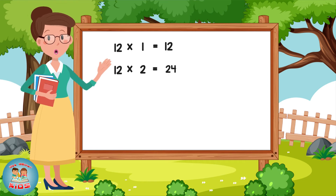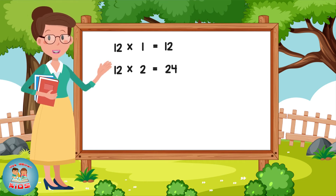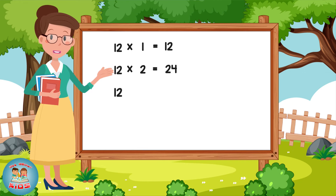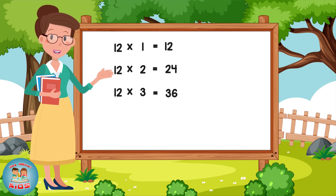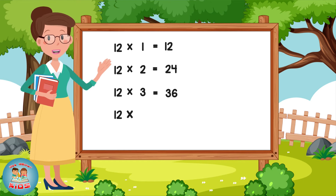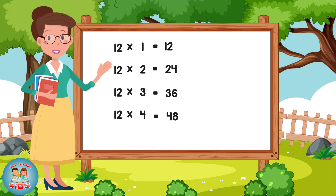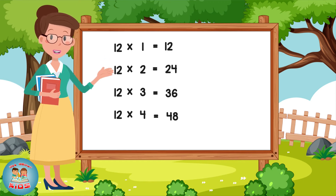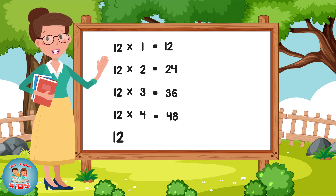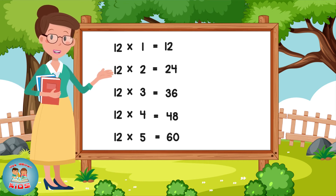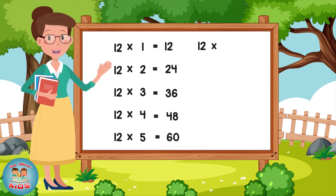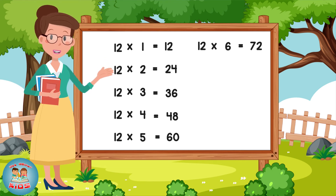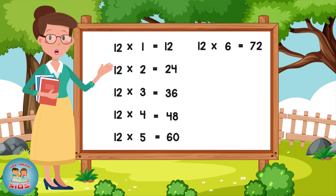12 twos are 24. 12 threes are 36. 12 fours are 48. 12 fives are 60. 12 sixes are 72.